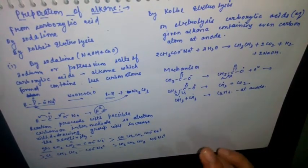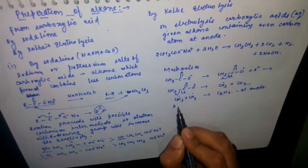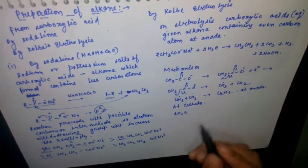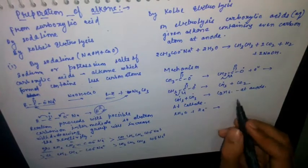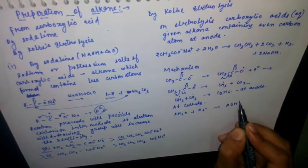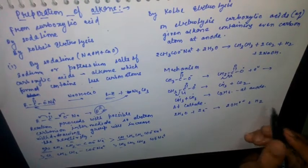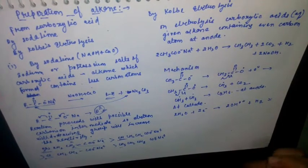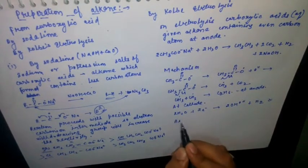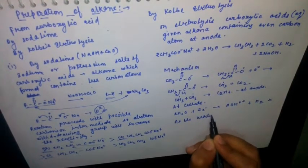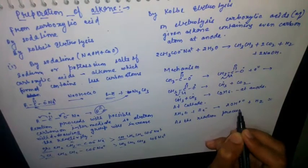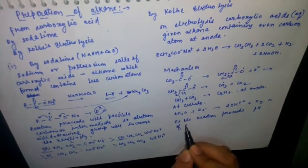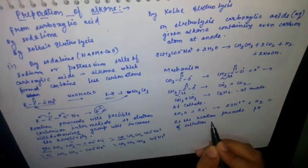At the cathode side, the reaction is: 2H₂O plus 2e⁻ gives 2OH⁻ plus H₂. Please remember this cathode reaction.